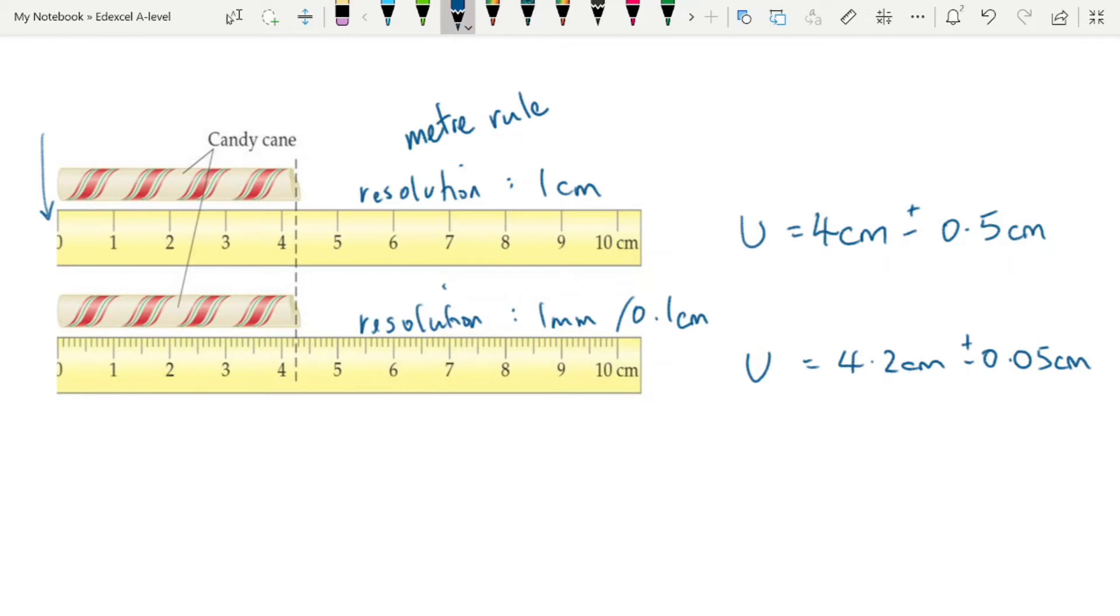We use these uncertainties usually to calculate a percentage uncertainty. So if we look at meter rule, we'll label them A and B. If we look at A, the percentage uncertainty is the measurement uncertainty, so 0.5, over the measurement times 100 to turn it into a percentage and that will give you 12.5%.